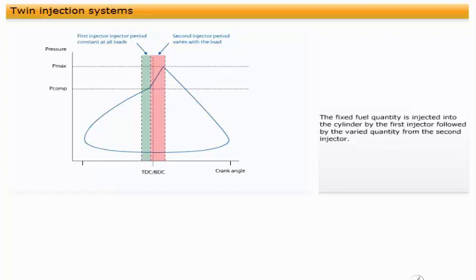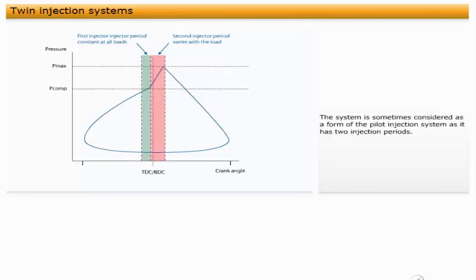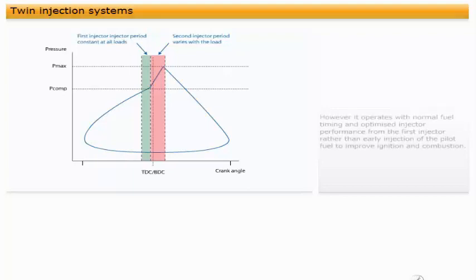The fixed fuel quantity is injected into the cylinder by the first injector, followed by the varied quantity from the second injector. The system is sometimes considered as a form of the pilot injection system, as it has two injection periods. However, it operates with normal fuel timing and optimizes injector performance from the first injector, rather than early injection of the pilot fuel, to improve ignition and combustion.